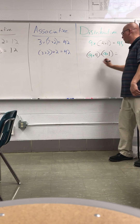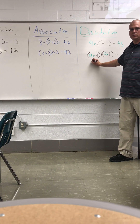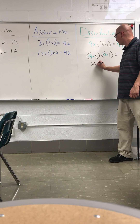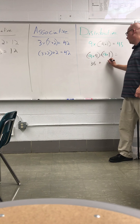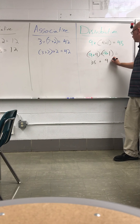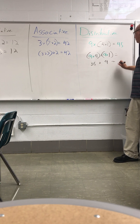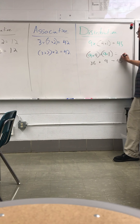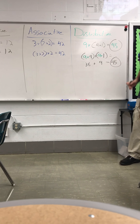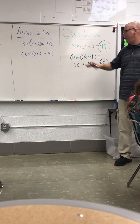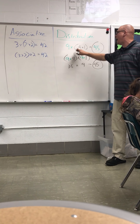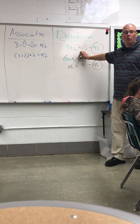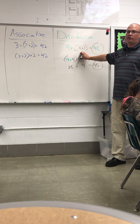What's nine times four? Thirty-six. Nine times one? Nine. Thirty-six plus nine? Forty-five. It literally means to pass out a multiplication problem using what we have inside the parentheses.